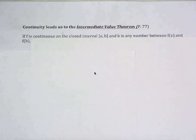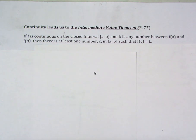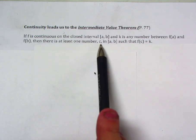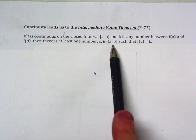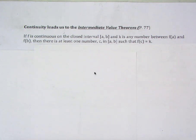Now let's talk about the conclusion. Here's what has to be true: there's at least one number C — some X value in the closed interval — such that F of C equals K. You have a continuous function on a closed interval and a Y value between the Y values of the endpoints, so K is between F of A and F of B. There is some X value in this interval where if you plug that X value into the function, you get that K value. Once I show it, it's pretty intuitive, but you have to know what the conditions say and what the conclusion is talking about.